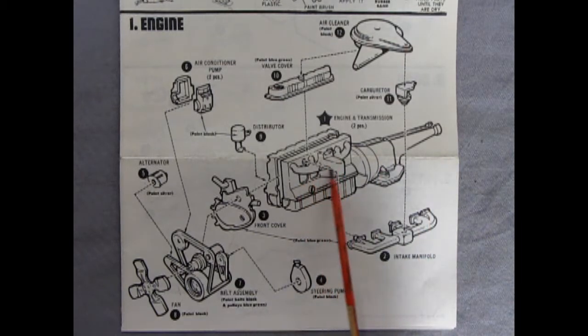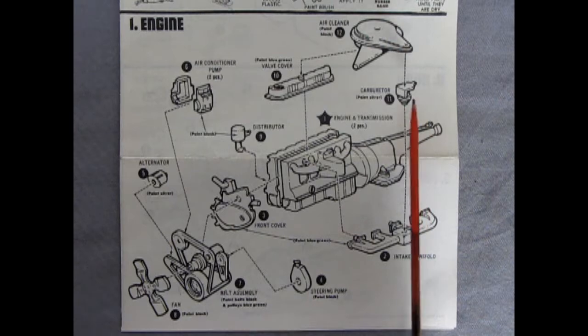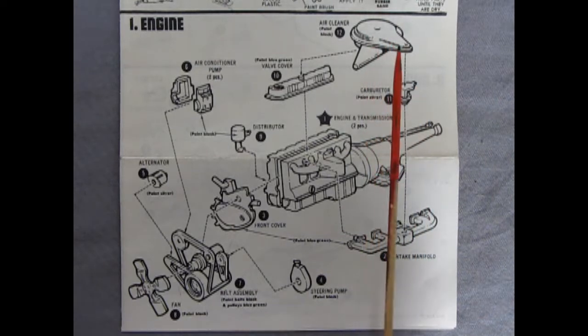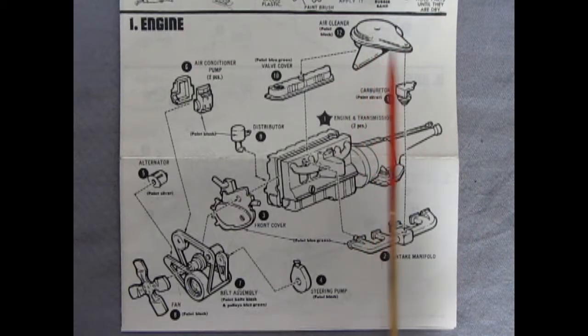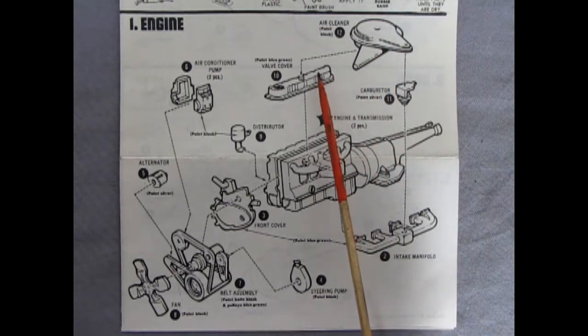Now the exhaust manifold is molded in on the block. Then we've got our carburetor here, our air cleaner. Interesting it crosses over here but the air intake is down here. And then there's our valve cover and our distributor right up in the front.